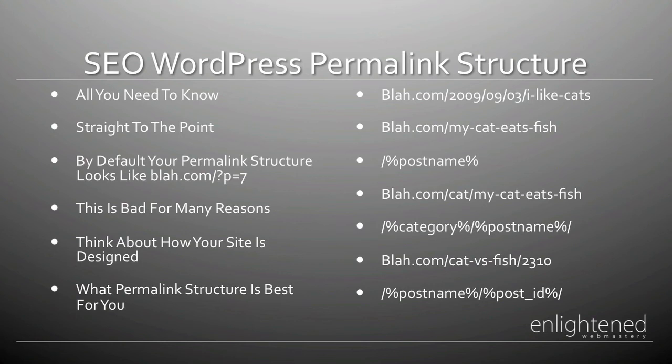Now I'm going to talk about the different types of permalink structures, how to use them, and what's good for which situation. The first example is blah.com/2009/09/03/i-like-cats. This permalink structure is great if you're doing a news site and posting three or four posts a day covering different topics. That way anybody can see whether an article is from 2009 or 2006, and can tell if it's a new article or an old one.